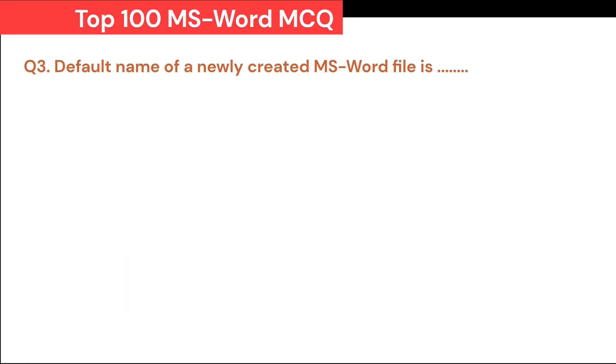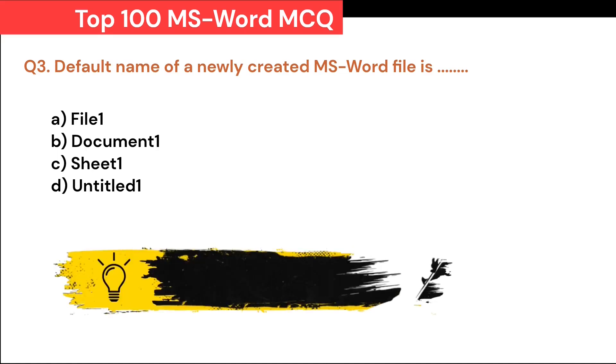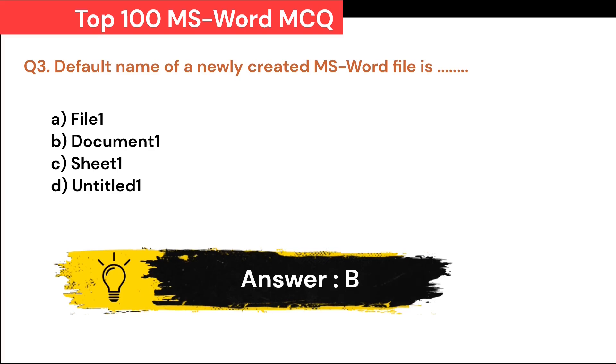Default name of a newly created MS Word file is: A. File 1. B. Document 1. C. Sheet 1. D. Untitled 1. Correct answer is B. Document 1.